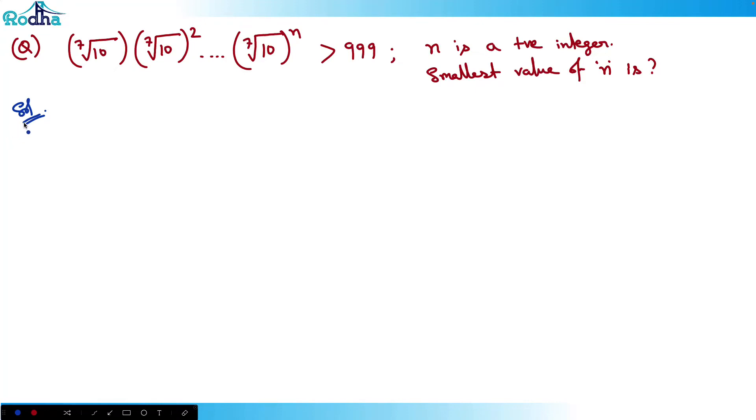Hi guys, let's look at this next question from CAT 2021 Slot 3, a question from algebra. It says that 7th root of 10 times 7th root of 10 squared times 7th root of 10 raised to n is greater than 999, and n is a positive integer. So what is the smallest value of n?